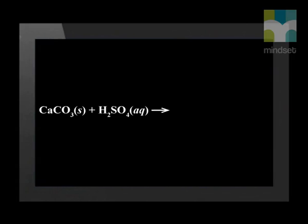First, we will react calcium carbonate with sulfuric acid. Before we do this experiment, let's see if we can predict what the products of the reaction will be using our knowledge of ion exchange. Our reactants are calcium carbonate and sulfuric acid. From our understanding of ion exchange, we know that the sulfate will bond with the calcium to form calcium sulfate.